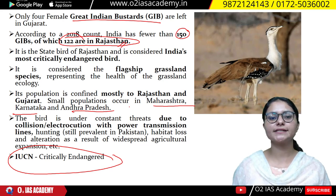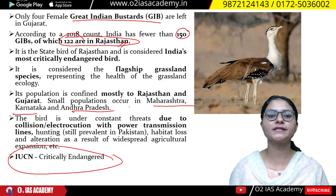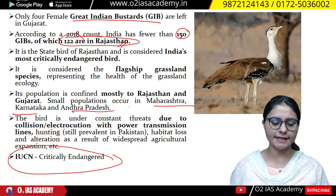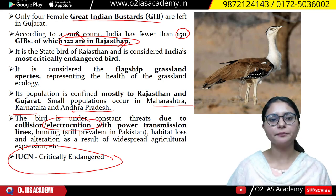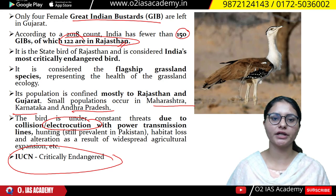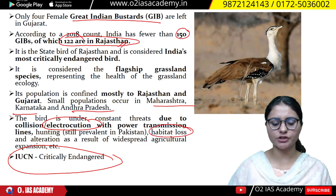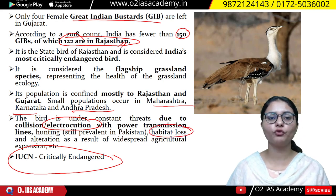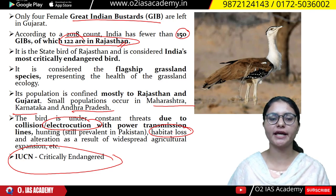The Great Indian Bustard population has been reduced because of many risks. One major threat is electrocution — electricity wires are very harmful to this bird. Moreover, there is a lot of habitat loss happening. This is why the population is declining.